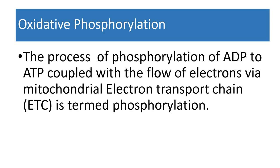You need to know the difference between substrate level phosphorylation and oxidative phosphorylation. If the formation of ATP occurs at the substrate level, it is called substrate level phosphorylation. Whereas, if phosphorylation occurs with the involvement of the electron transport chain, it is termed oxidative phosphorylation — the process of phosphorylating ADP into ATP coupled with the flow of electrons via the mitochondrial electron transport chain.